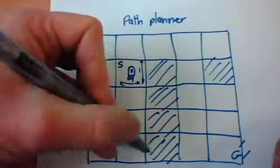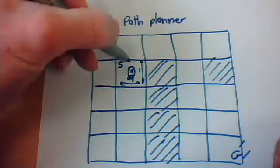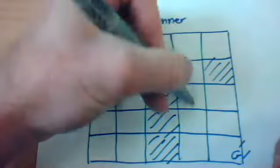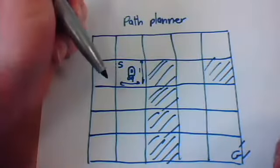This is the robot's world, and it really needs to get from its starting position down to the goal. But which way does it go? Does it go this way? Obviously, it's a dead end. So we can see, because we're quite clever, that it needs to take a path like this. But how do we do that?